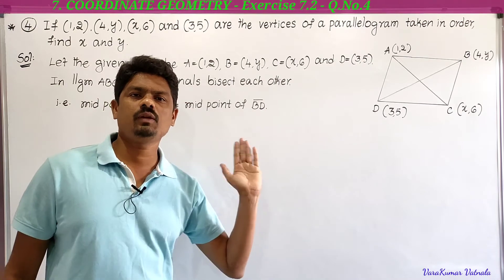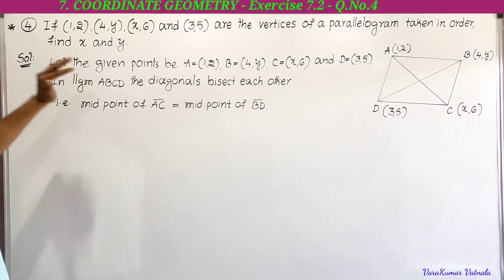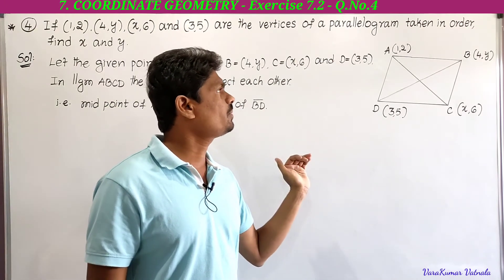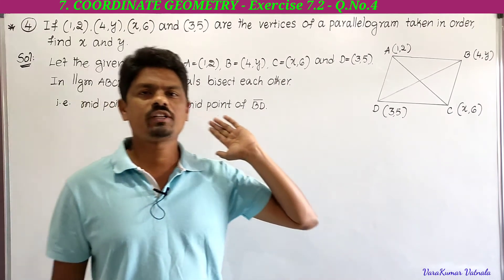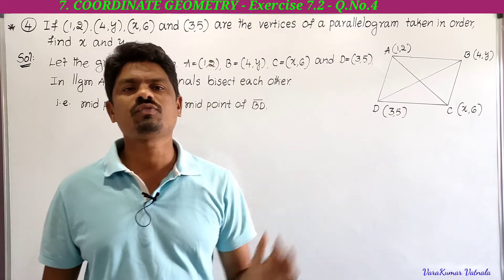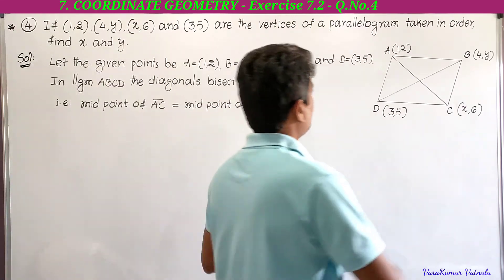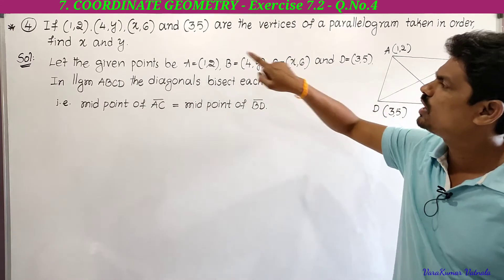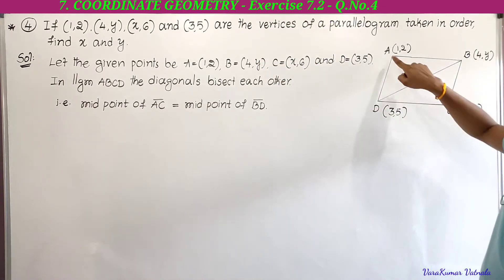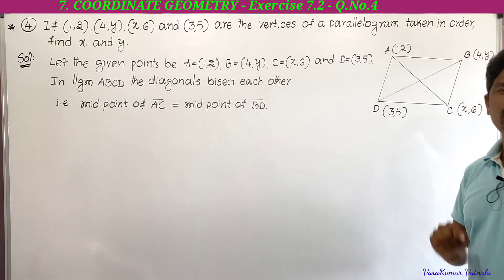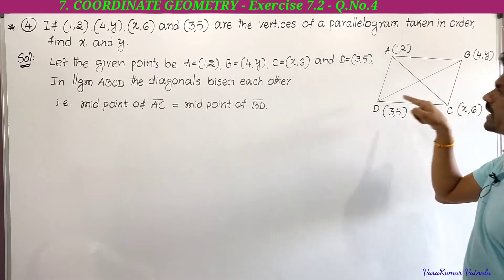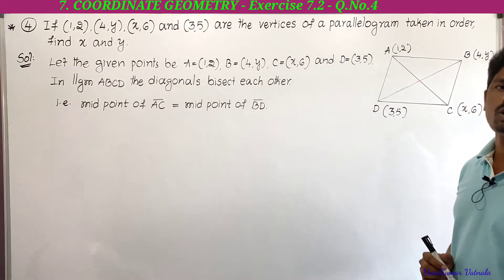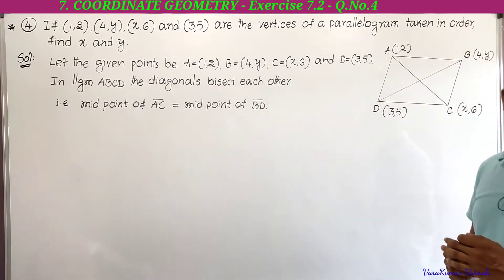This is the fourth problem in Exercise 7.2. If (1, 2), (4, y), (x, 6) and (3, 5) are the vertices of a parallelogram taken in order, find x and y. He has given four vertices of a parallelogram and is asking us to find x and y. Let the given four points be A = (1, 2), B = (4, y), C = (x, 6), D = (3, 5).